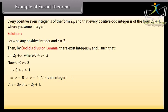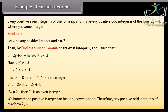Therefore A equals 2Q or A equals 2Q plus 1. If A equals 2Q, then A is an even integer. We know that a positive integer can be either even or odd. Therefore any positive odd integer is of the form 2Q plus 1.